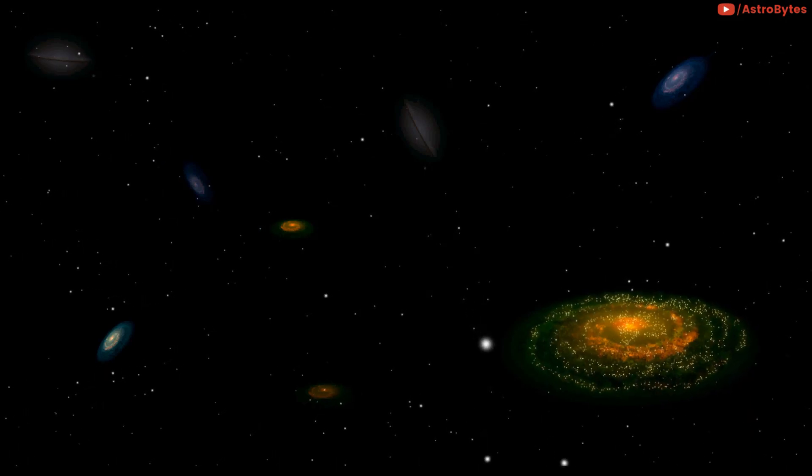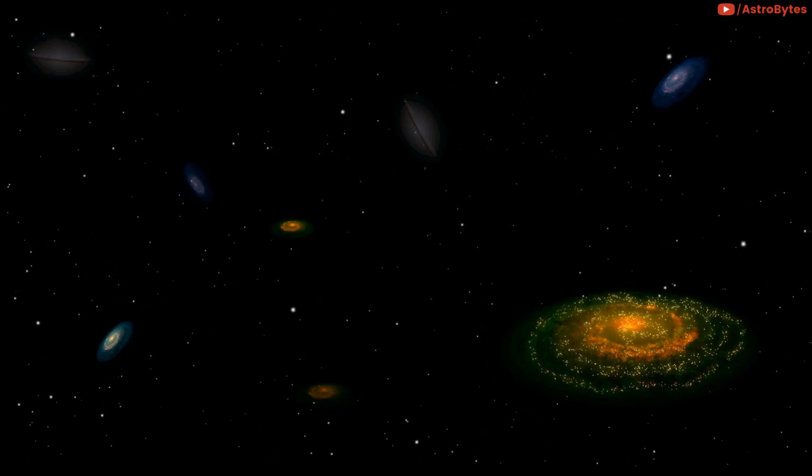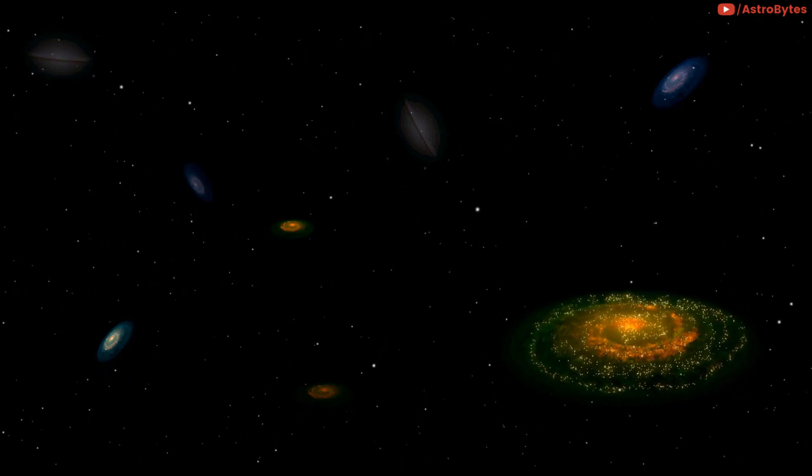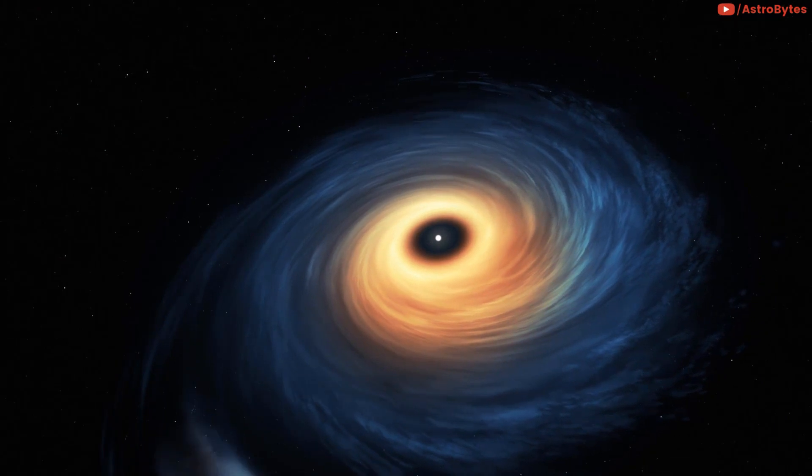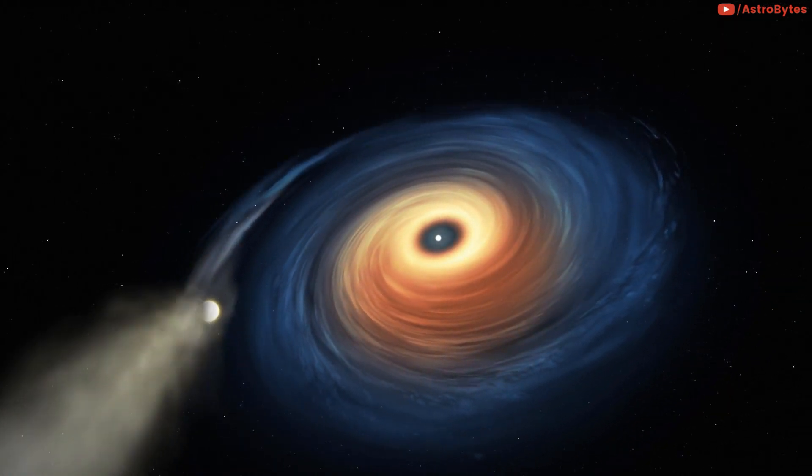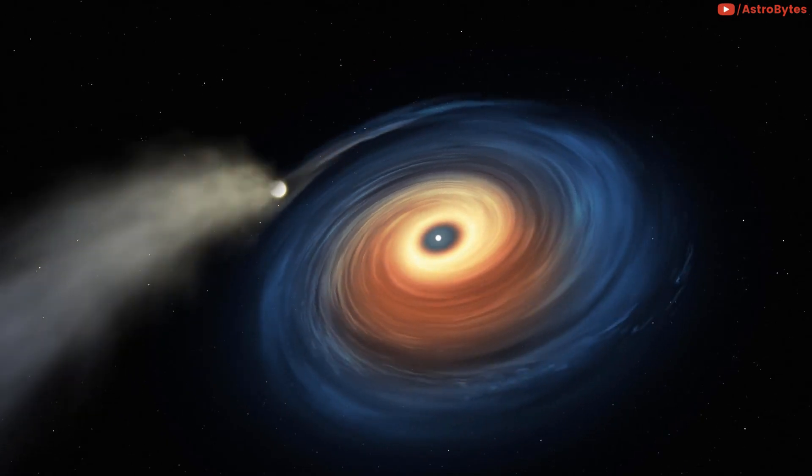Galaxy clusters are among the largest structures in the universe. They contain thousands of individual galaxies, dark matter and hot gas. At the heart of the Ophiuchus cluster, there is a large galaxy that contains a supermassive black hole with a mass equivalent to 10 million suns.